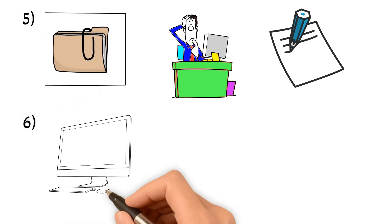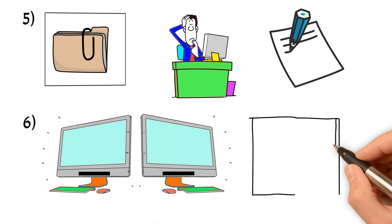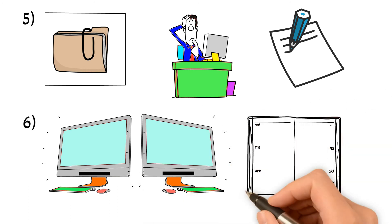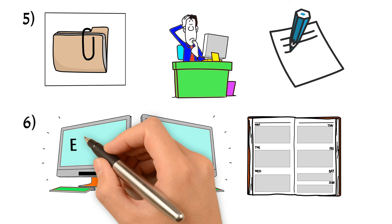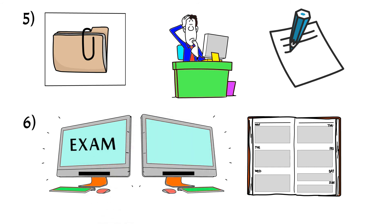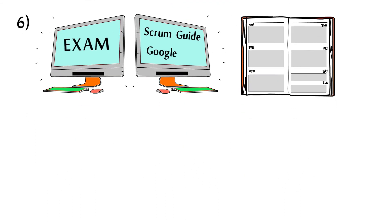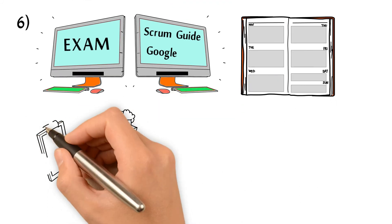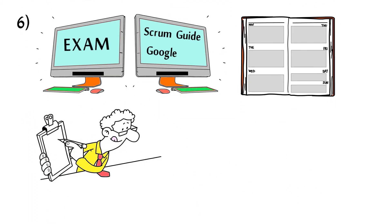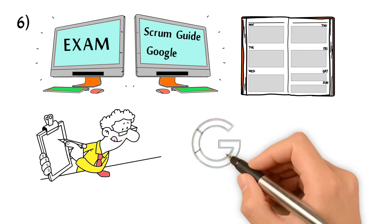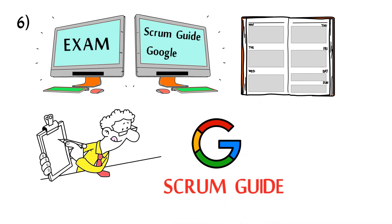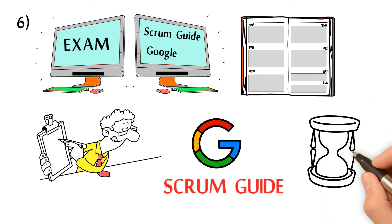Six, dual screen monitors may help since it is an open book exam. One screen is for your exam screen, the other screen can be used for your Scrum Guide or Google. You may pick up a few good answers for your exam. However, do not rely heavily on Google or Scrum Guide during the exam. Otherwise, you will not have enough time to complete your exam.